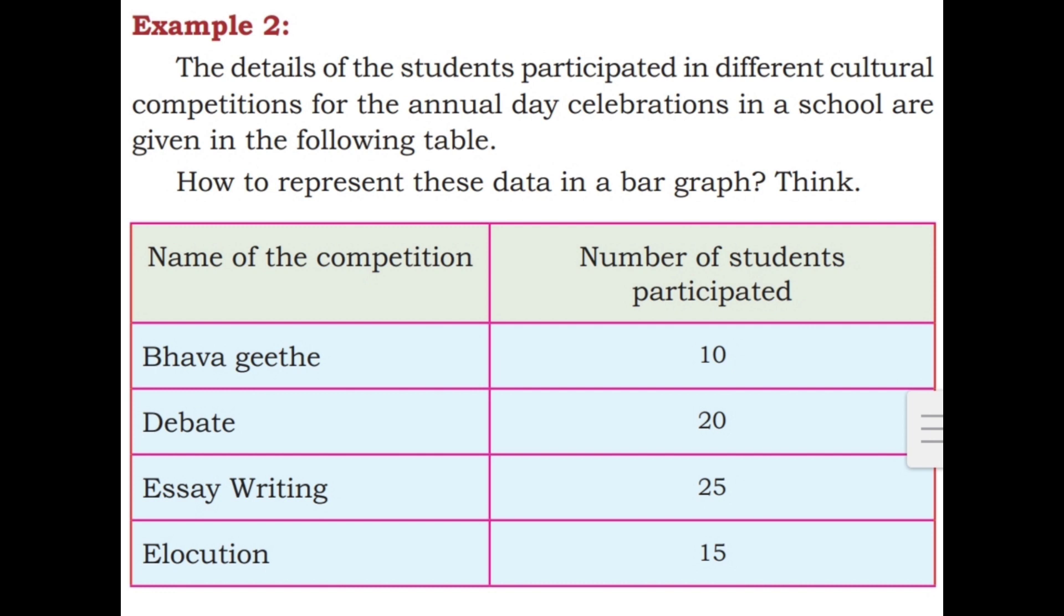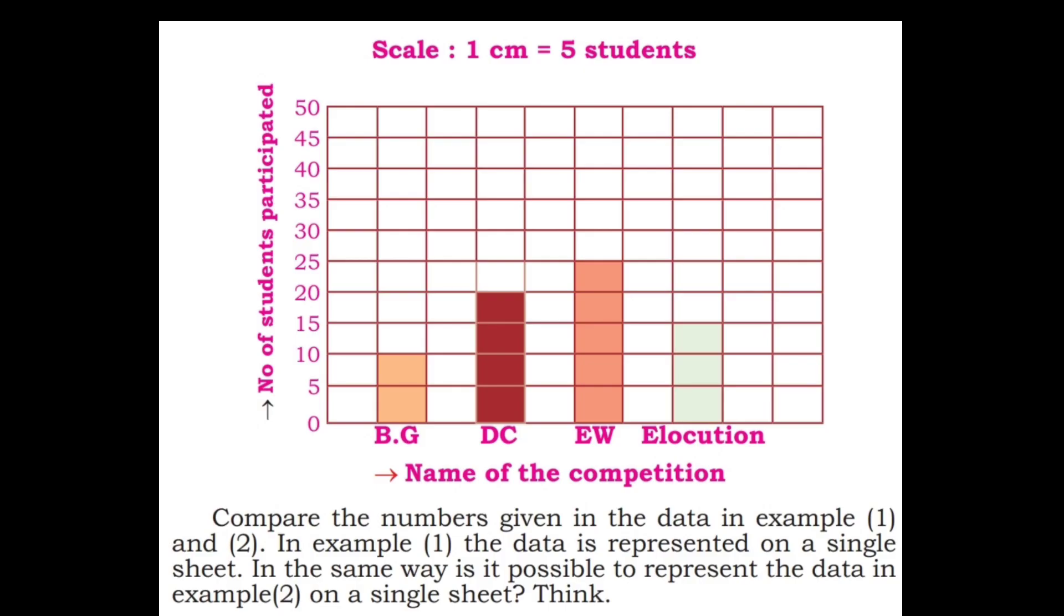Next question, Example 2. The details of the students participated in different cultural competitions for the annual day celebrations in a school are given in the following table. How to represent these data in a bar graph? Think. Name of the competition is given with the number of students participated. In example 1, the data is represented on a single sheet. In the same way, is it possible to represent the data in example 2 on a single sheet? Think.